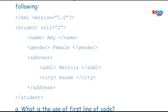Whatever element comes first after the processing instruction is known as the root element. An XML document can have just one root element. After the root, elements will be parent or children. Here, after student, the elements are name, gender, and address. If someone asks how many elements are there, you count all the opening tags: student, name, gender, address, add1, and city — that gives six elements total.